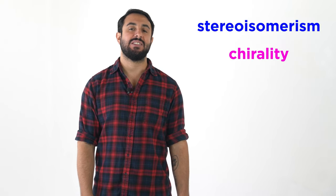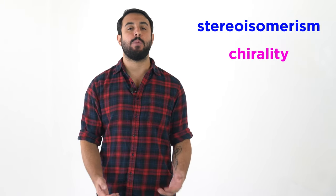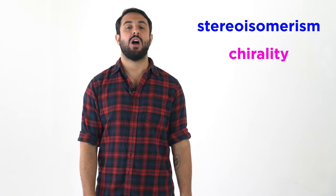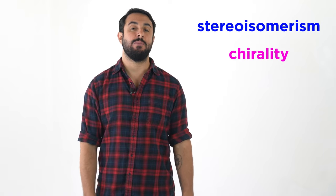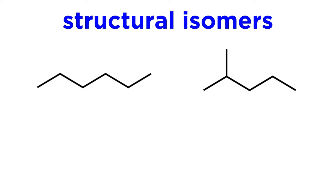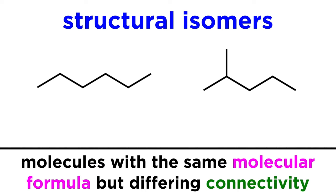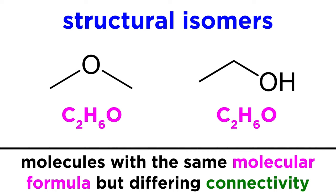With that we have set the stage for an important concept: the notion of stereoisomerism and chirality. We already know what structural isomers are — these are molecules that have the same molecular formula but differing connectivity, like a straight chain alkane versus a branched alkane with the same number of carbons, or dimethyl ether versus ethanol, which produces different functional groups.